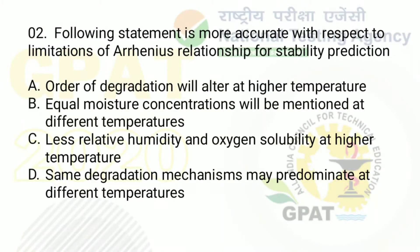The next question was: which following statement is more accurate with respect to limitation of the Arrhenius relationship for stability prediction? Option A: order of degradation will alter with temperature at higher temperature. Option B: equal moisture concentration will be maintained at different temperatures. Option C: less relative humidity and oxygen solubility at higher temperature. Option D: same degradation mechanism may predominate at different temperatures. The right answer is option C — less relative humidity and oxygen solubility at higher temperature is the limitation of the Arrhenius relationship for stability prediction.